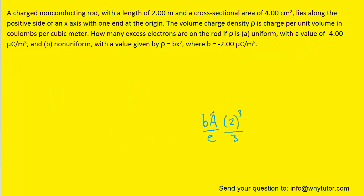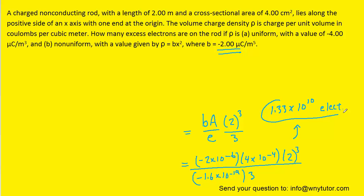We're now ready to plug in the known values. Notice that b was given in a non-standard form as well. So, that needs to be written as negative 2 times 10 to the minus 6. The area was already converted earlier. And when you crunch that down, you should get approximately 1.33 times 10 to the power of 10 electrons. And that will be the correct answer to part B of the question.